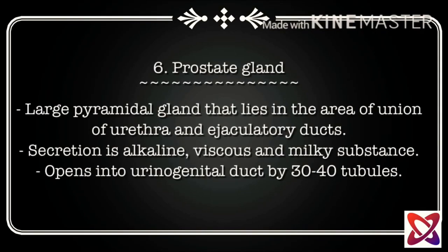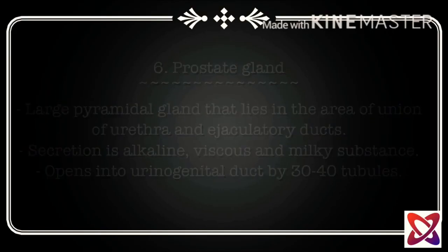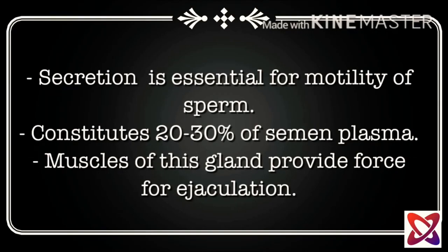The sixth component is the prostate gland. It is a large pyramidal gland that lies at the area of union of the urethra and ejaculatory ducts. Its secretion is an alkaline, viscous, milky substance. It opens into the urinogenital duct by 30 to 40 tubules. The secretion is essential for motility of sperm, and it constitutes 20 to 30 percent of seminal plasma.